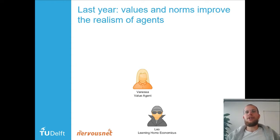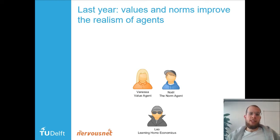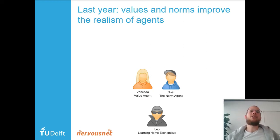Leo was also outperformed by Noël, who follows others. He looks at the social norm — for example, a norm right now is that people listen through the presentation. And Noël always follows the norm, doing exactly what is expected.